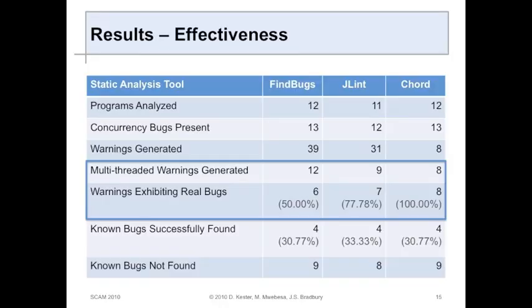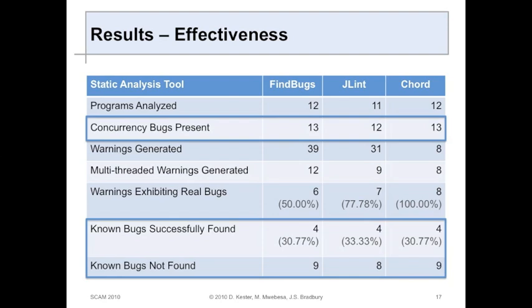These are the results we got. In terms of the effectiveness - warnings being real bugs - it varied. FindBugs was only 50% effective, so 50% of the results it produced were spurious. JLint about half of that, specifically 27% effective. Cord found no spurious results - basically all the results it produced pointed to a real bug. Now, effectiveness in terms of finding all the known 13 bugs: each of them did about the same. They found 4 bugs each, so they were about 30 to 35% effective.